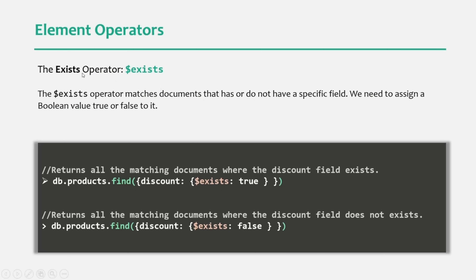Let's start with the exists operator. This exists operator checks for a given field on a document and, based on that, filters the documents. For example, let's say we have the products collection and we want to filter all the documents where we have the discount field — not all products will have the discount field. We use the exists operator and assign it true. All documents where the discount field is present will be returned. If we assign false, only those documents without the discount field will be filtered.